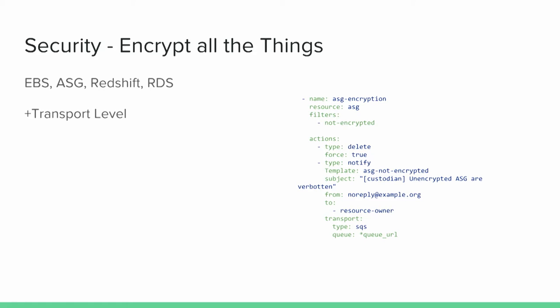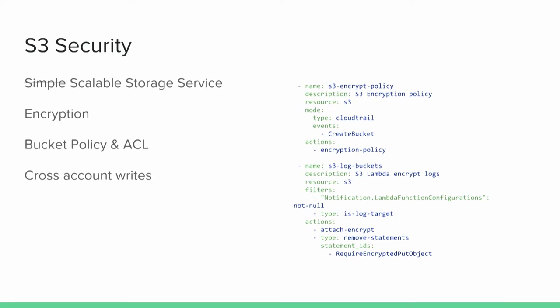On the encryption side, we have a filter for non-encrypted which will actually scan the ASG, its launch config, and all the snapshots and AMIs associated to figure out if it is non-encrypted, and then take actions like delete and notify. We can do that for ASGs, Redshift, RDS, pretty much anything out there. You can do transport-level security on Redshift and RDS by scanning the parameter groups. For S3, we'll slap down encryption policies as you create buckets, automatically detect if that bucket is a log target, and flip out from an encryption policy — because AWS doesn't store logs encrypted for ELB or S3 logs — and instead attach a Lambda encrypt function to that bucket.